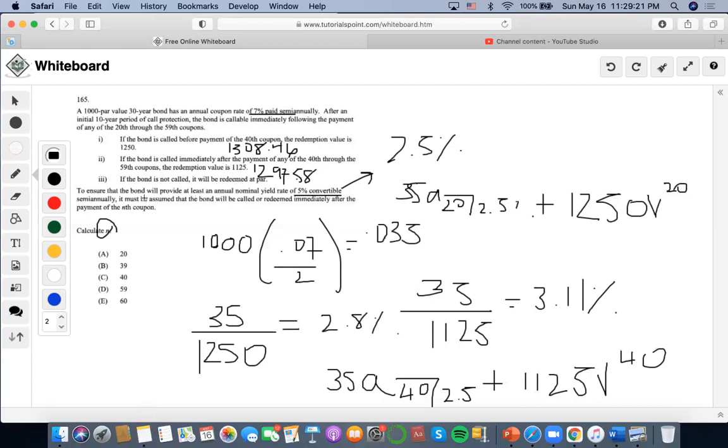The next one is if the bond is not called, it will be redeemed at par. We spoke about what par is. If it's being redeemed at par, then that means the bond is not being called at all. We don't really have to deal with whether it's a premium or a discount. It's just going to be called towards the end. It's just a conventional bond pricing formula.